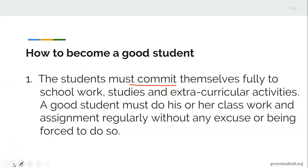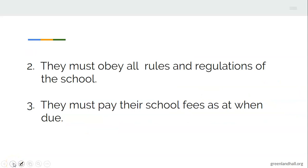How to become a good student: they must obey all rules and regulations of the school. Every rule of the school — you must play according to the rules. If the school authority says you should not do something, obey voluntarily. They must also pay their school fees as at when due. When you are not paying your school fees you will be deprived from staying in class, and you may be asked to go back home. Always remind your parents about your school fees so that you will not be embarrassed by being chased out of class.